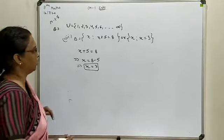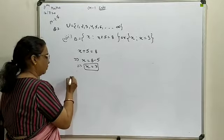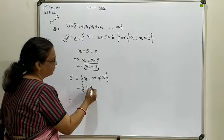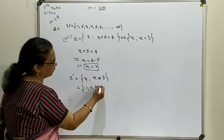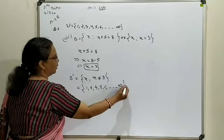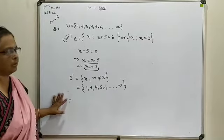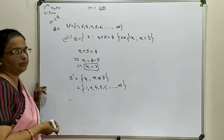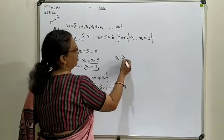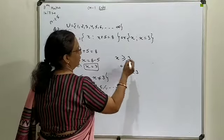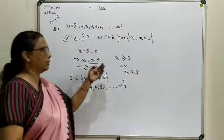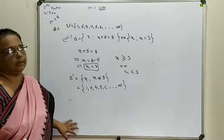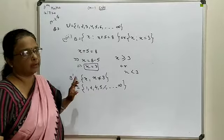In statement form or solution form, complement of B can be written as {x : x ≠ 3}, or you can list: from U, cut 3, and the remaining elements are 1, 2, 4, 5, 6, and so on up to infinity. This is how to handle questions where a relation is given. In some cases, instead of an equality, inequalities like less than or greater than may be available, and the reverse condition is to be written as the complement form.